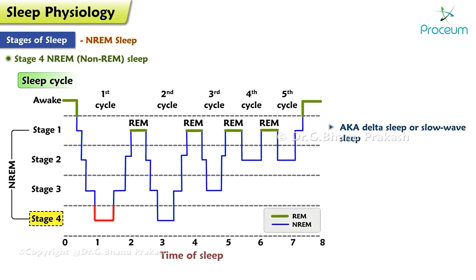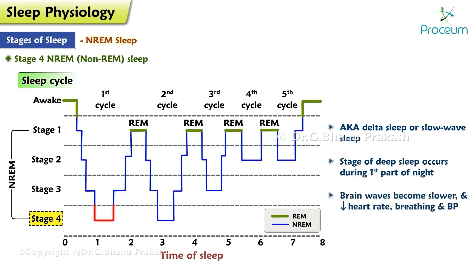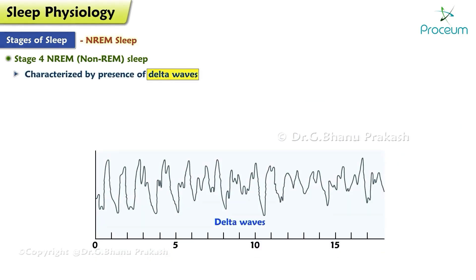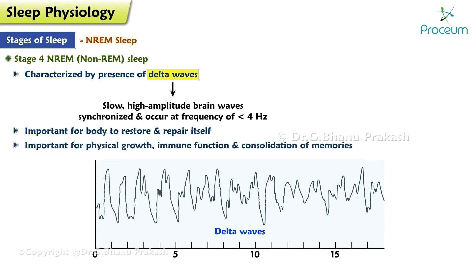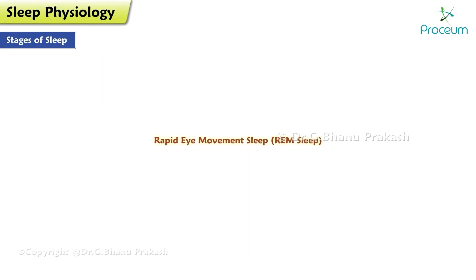Stage 4 non-rapid eye movement sleep, also known as delta sleep or slow wave sleep, is a stage of deep sleep that typically occurs during the first part of the night. During this stage, brain waves become slower and there is a decrease in heart rate, breathing, and blood pressure. It is characterized by the presence of delta waves — slow, high-amplitude brain waves synchronized at a frequency of less than four hertz. This stage is important for the body to restore and repair itself, and is thought to be particularly important for physical growth, immune function, and the consolidation of memories.